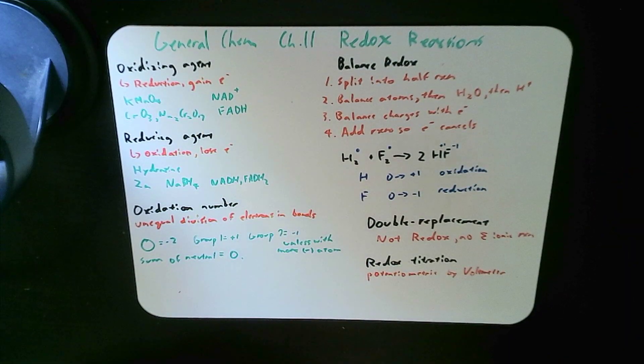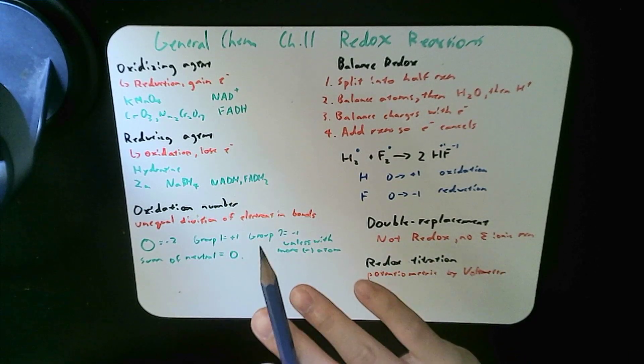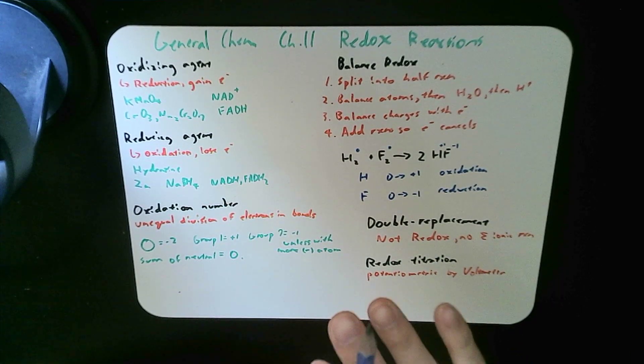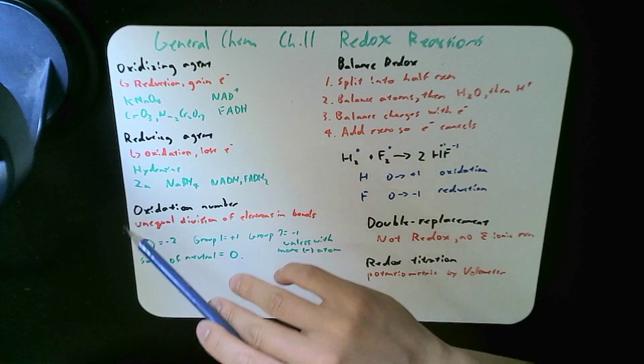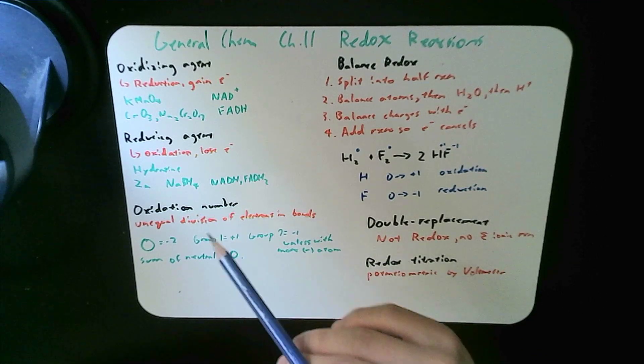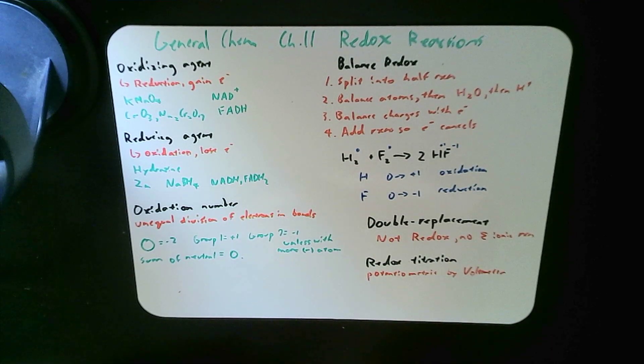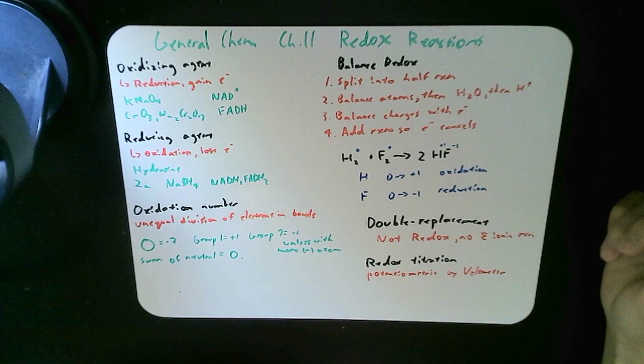Oxidation means the loss of electrons, where a particular atom or set of compounds want to get rid of electrons in favor of a binding. However, the opposite of that, reduction means gaining electrons.